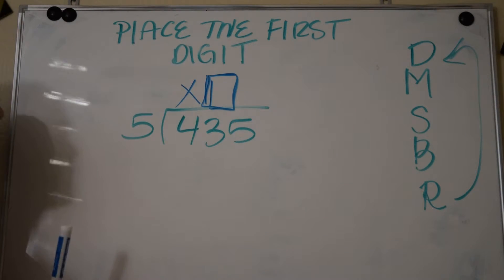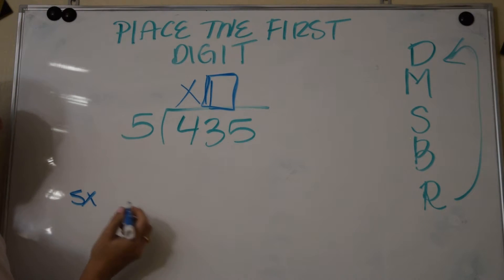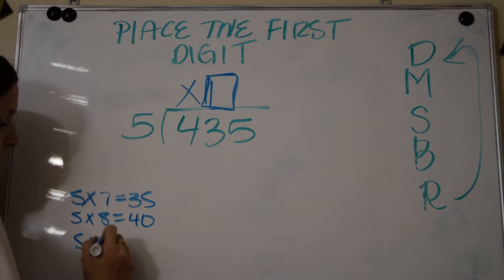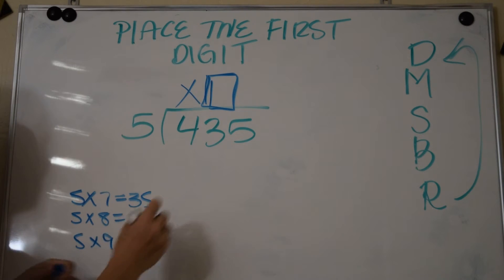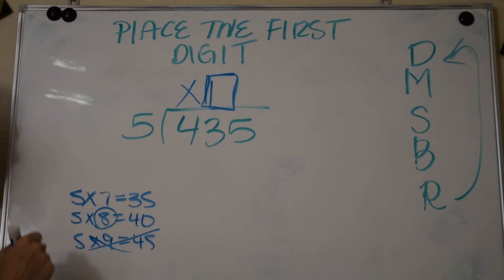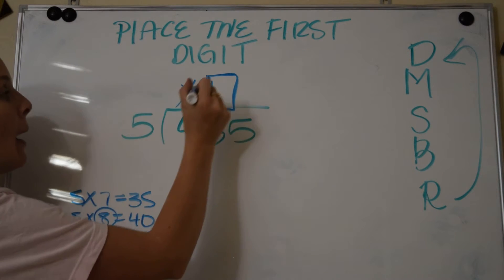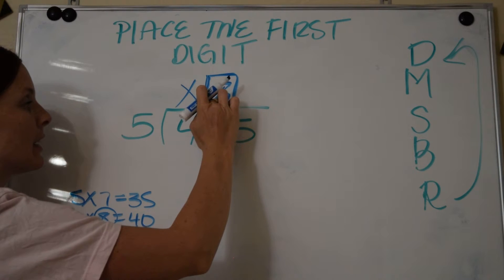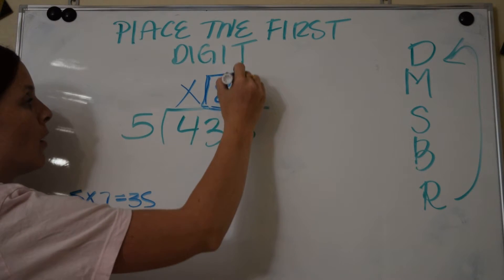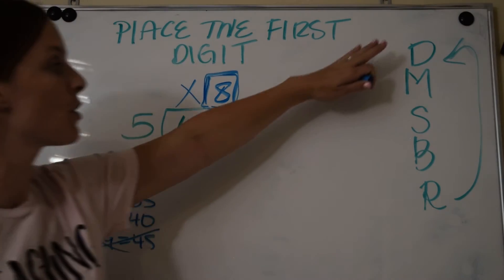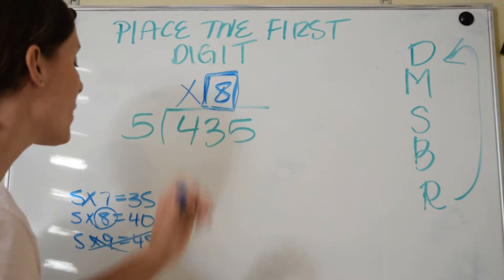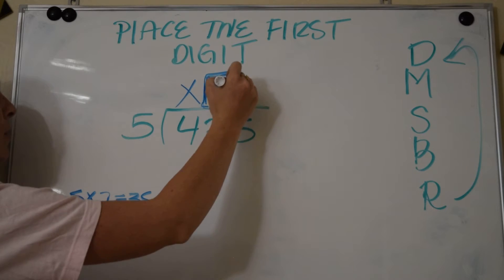So let's go ahead and solve. 5 into 43, that doesn't sound like a fact family, but I need to see how many times it can go in. Well, I know that 5 times 7 is 35, which is close, but I need to keep going. 5 times 8 is 40, we're getting closer. 5 times 9 is 45. Oh, 45 is too high, so the most it can go in is 8 times. So place your 8, and where am I placing it? Above the 3. Most important part of this lesson.